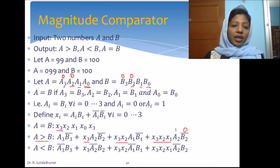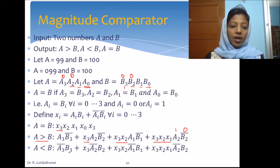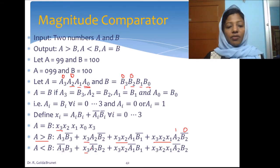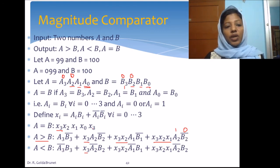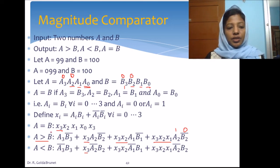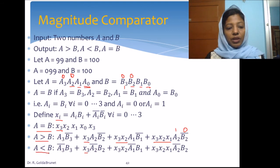For A less than B: A3 is 0 and B3 is 1, so we have the term A3_bar·B3. If A3 and B3 are the same, X3 is 1 and we check if A2 is 0 and B2 is 1, and so on. We proceed in this way through all bit positions to find out whether A is less than B.